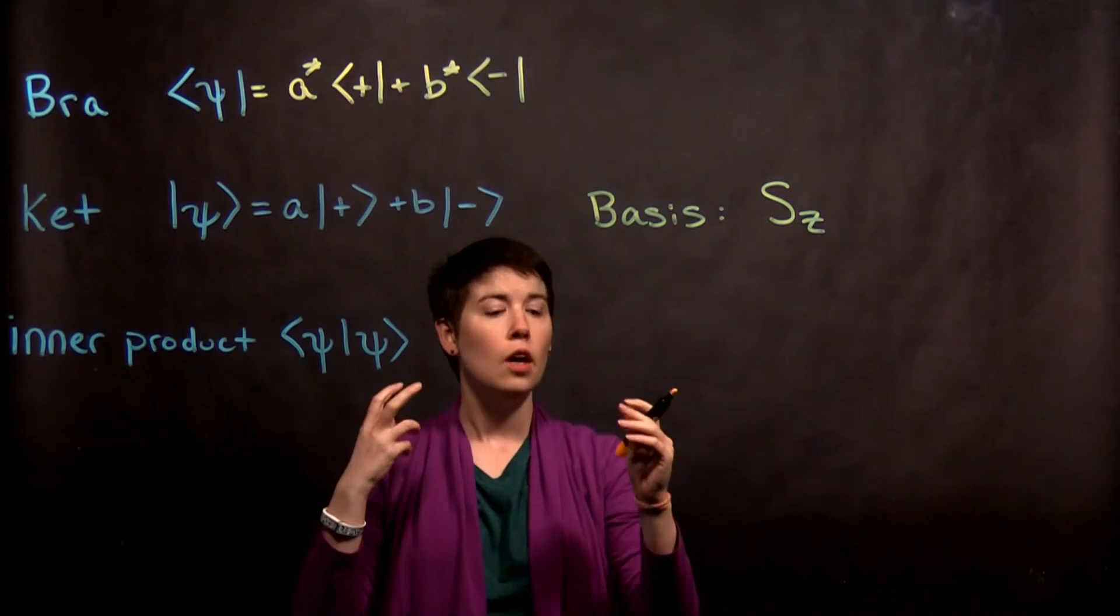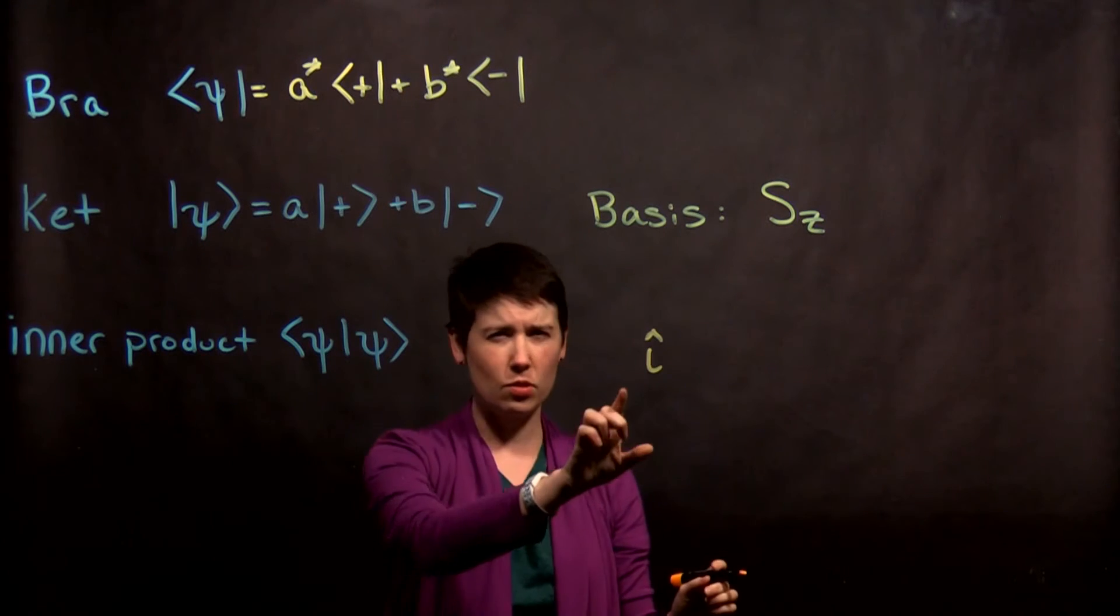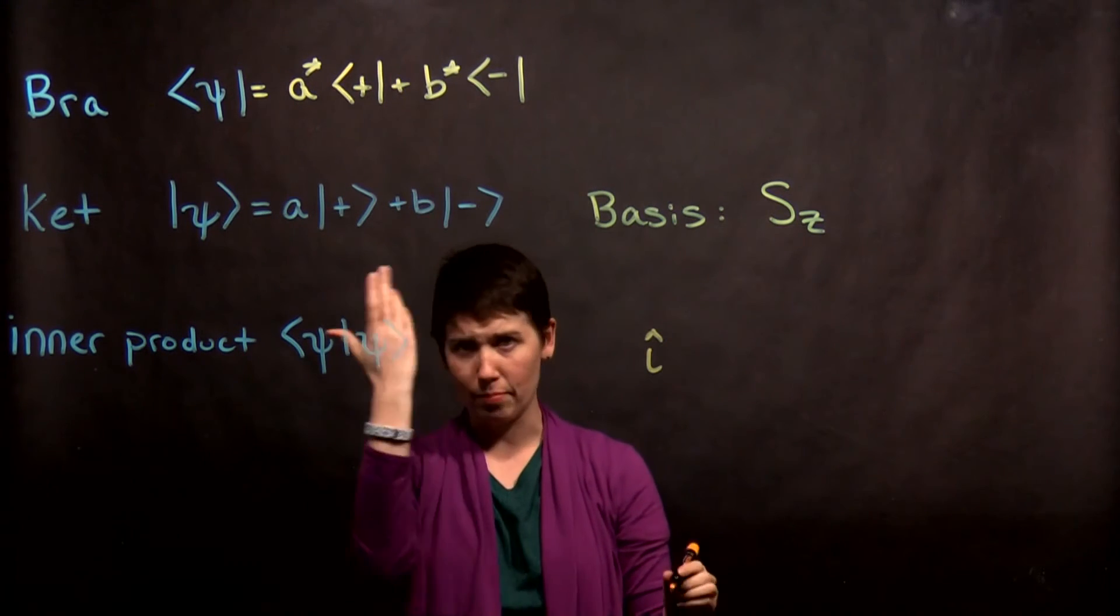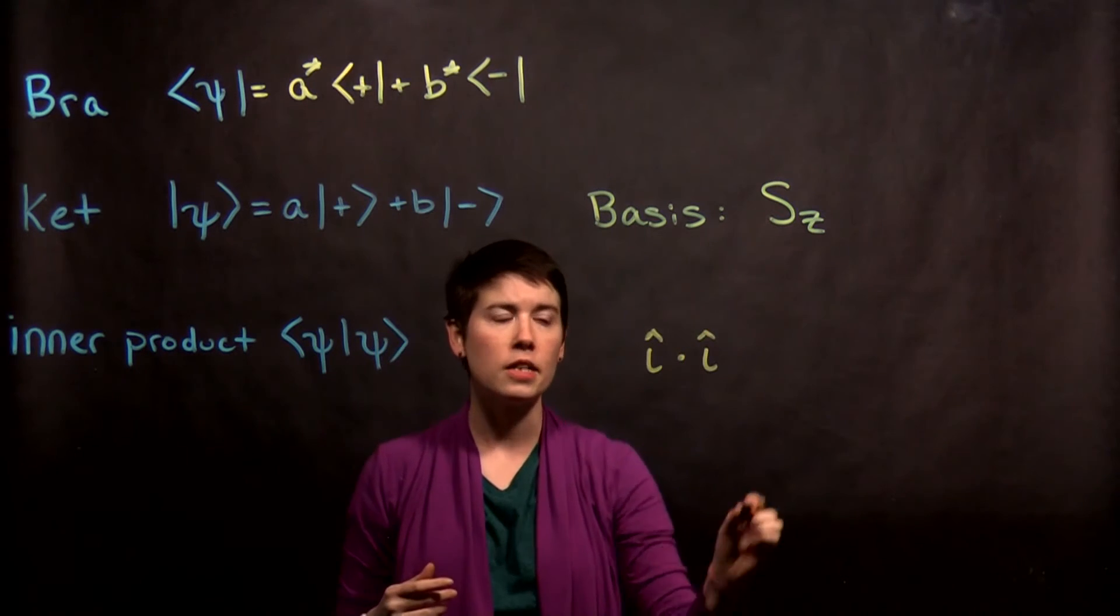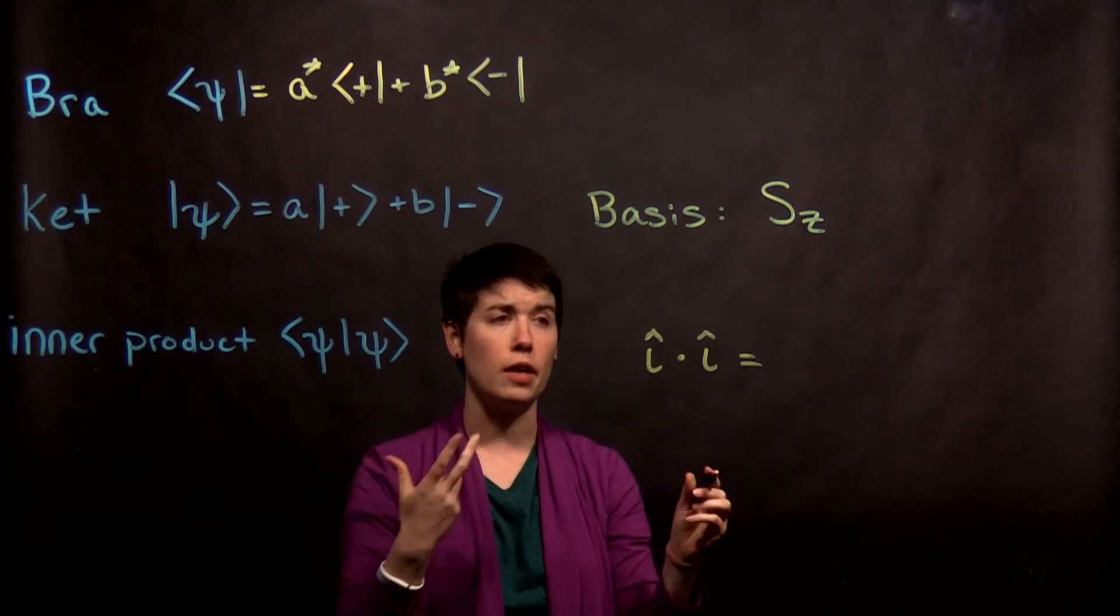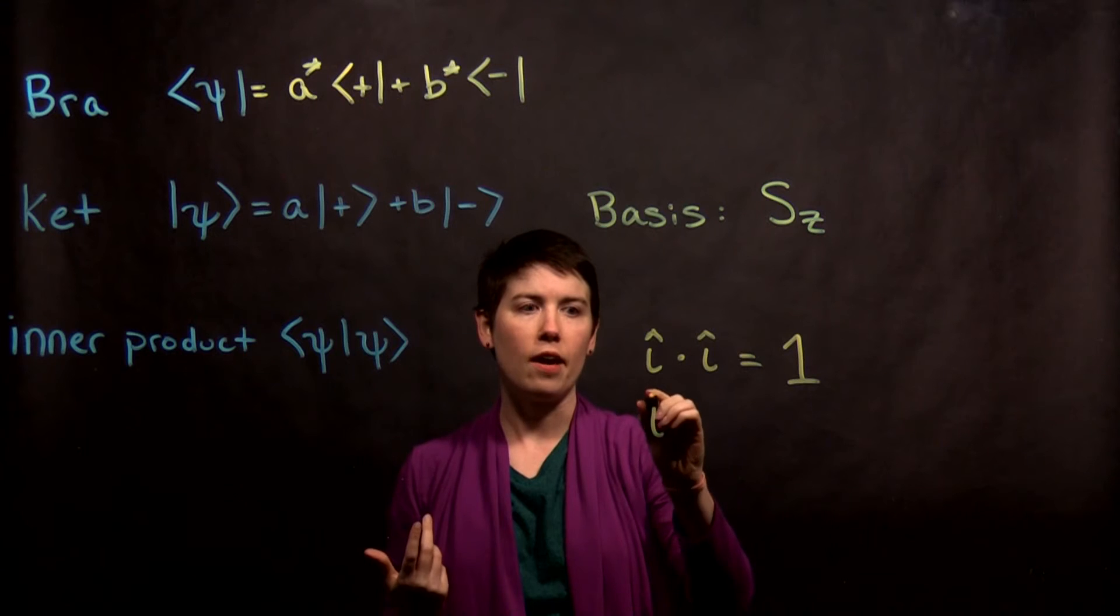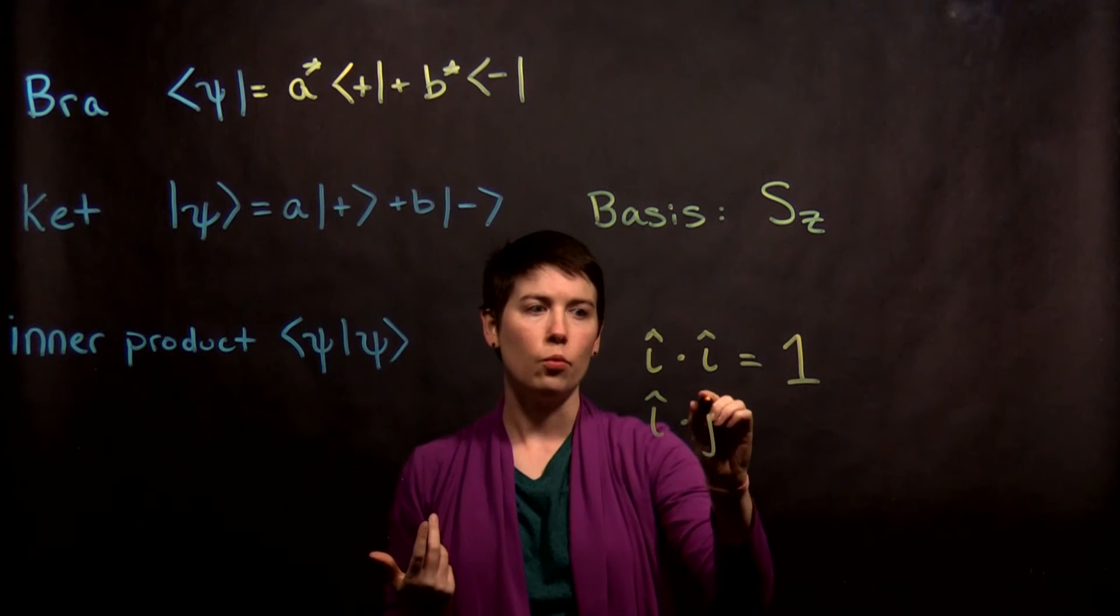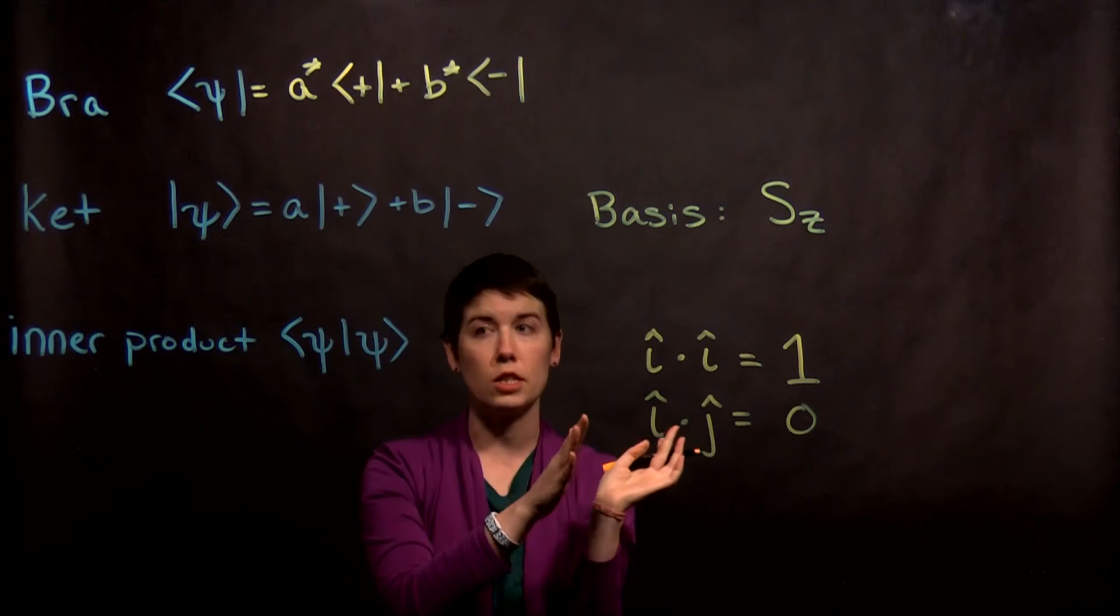So if I take two unit vectors, for instance, i hat, not in this case square root of negative one, but just in the i direction, dot product with i hat. In this case, we know that those two vectors go in the same direction. They each have a length of one. So this is going to be one. If, instead, I have i hat dot product with j hat, we know that that's going to be zero, because those two vectors are perpendicular to one another.